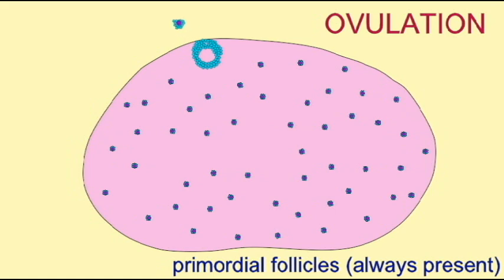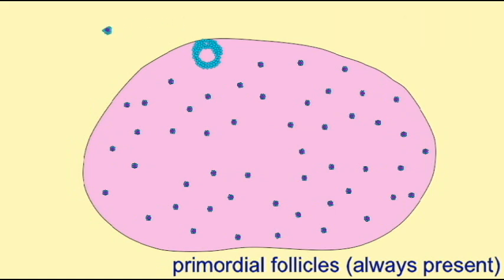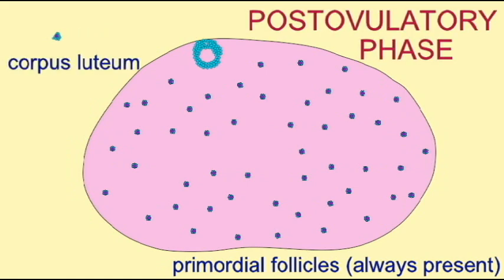Much of the follicle does not leave the ovary with the secondary oocyte, but instead transforms into the endocrine structure, the corpus luteum, which will make the hormone progesterone, which will maintain the uterine lining.